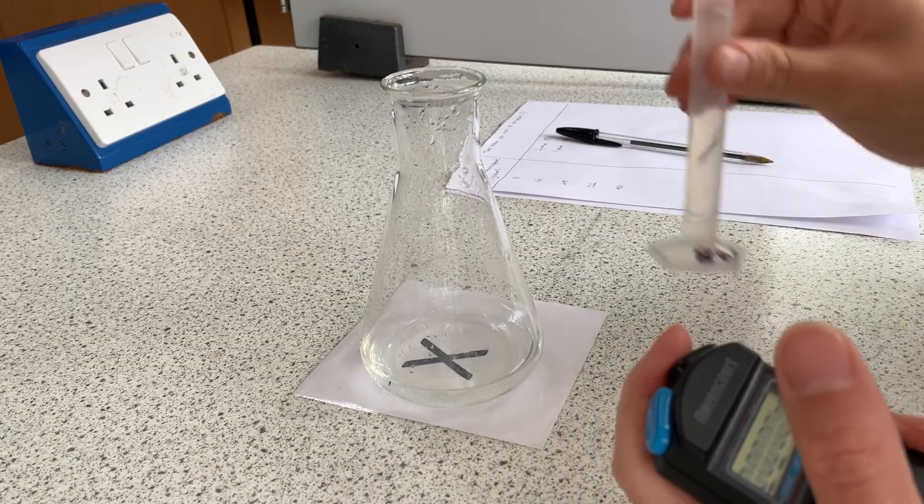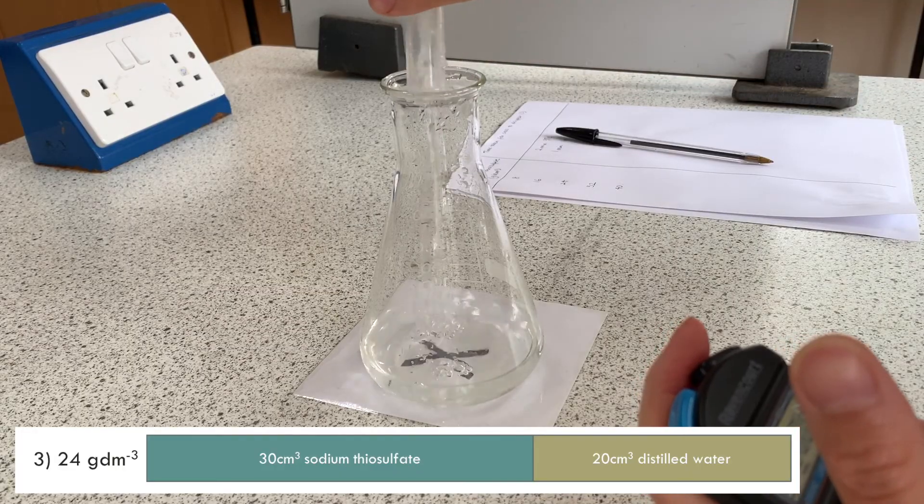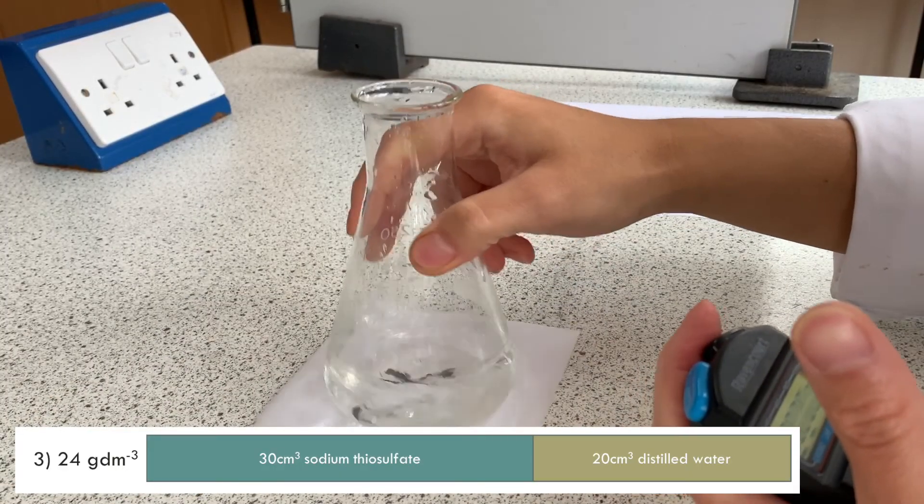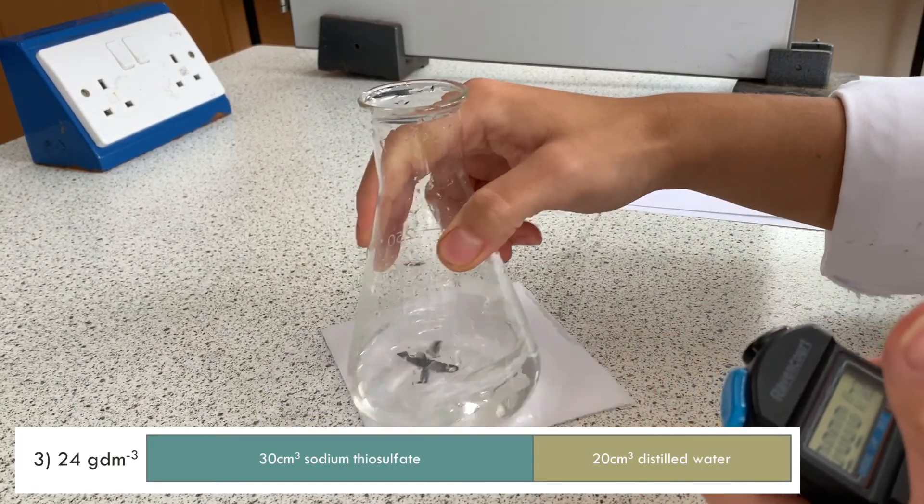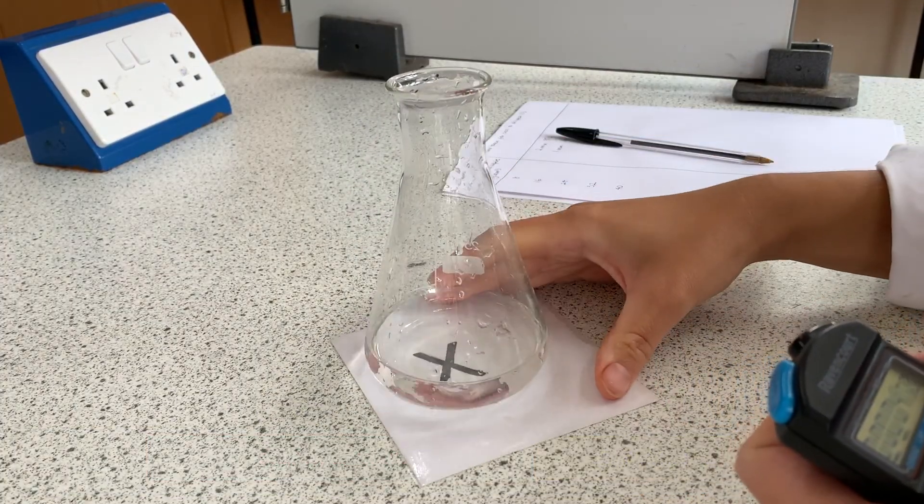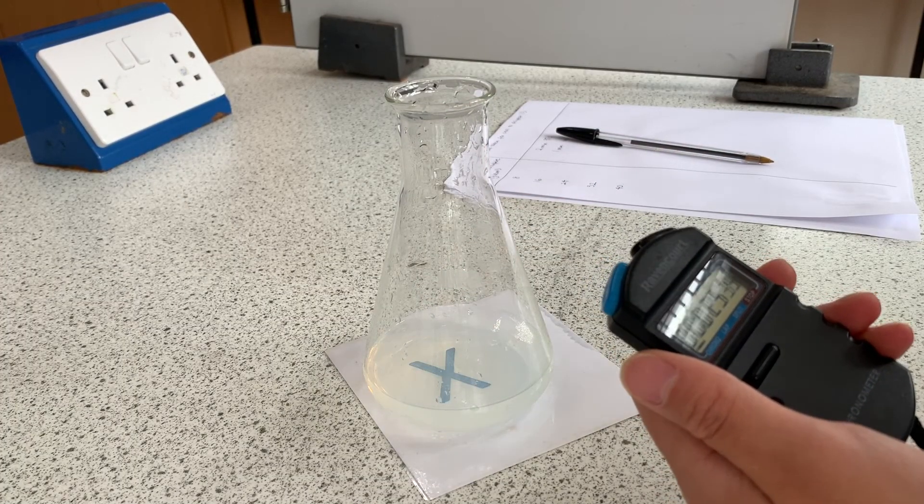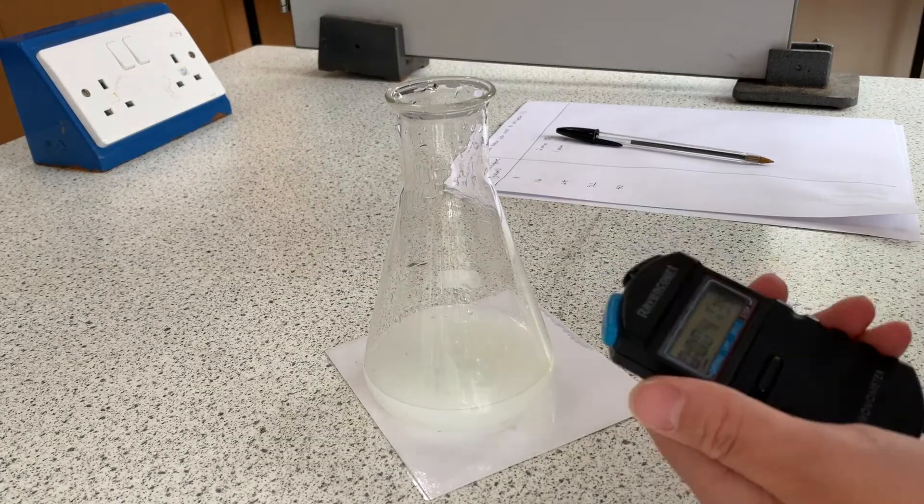Here is the reaction with the 24 grams per decimetre cubed solution. This was made by mixing 30 centimetres cubed of sodium thiosulfate with 20 centimetres cubed distilled water. Again, 10 centimetres cubed hydrochloric acid was added and the reaction mixture was swirled whilst the clock was started.